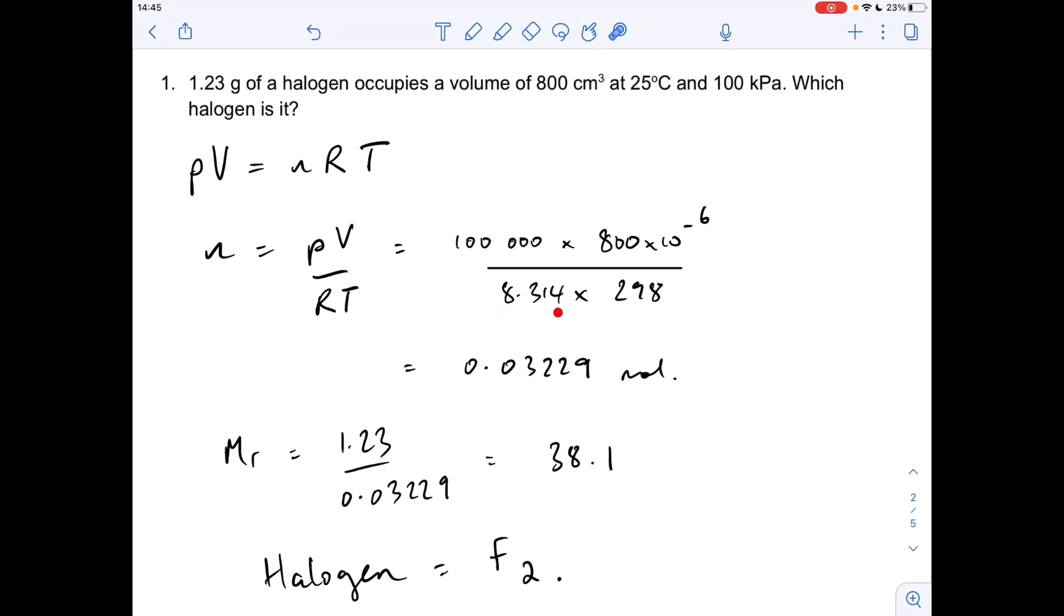All over the gas constant, 8.314, it's on the datasheet, and 25 degrees C in Kelvin is 298 Kelvin. So we get 0.03229 moles. Mass over moles gives us an MR for this halogen of 38.1. Just bear in mind that halogens exist as diatomic molecules, and so the halogen was F₂ fluorine.